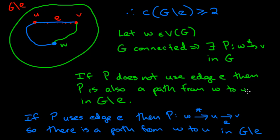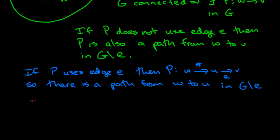These paths from W to V or from W to U exist in the graph G minus E. What that tells us is that every vertex in the graph without edge E is connected either to V or to U. So that means you can have at most two components — we cannot have three or more components. Therefore, the number of components of G without E is equal to 2. That completes the proof. We now know that if we remove a bridge edge in a connected graph, the number of components in the remaining graph is equal to 2.